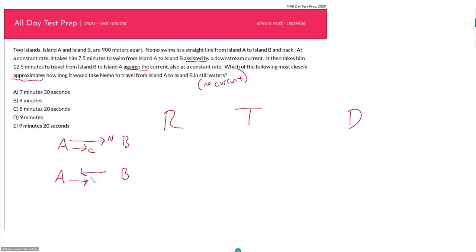Then he returns from island B—the current is still going from left to right, but now Nemo is going in the opposite direction. For the second part of the trip, he's going against the current. What else do we know? We can fill in our distance for each of the two legs is 900 meters.